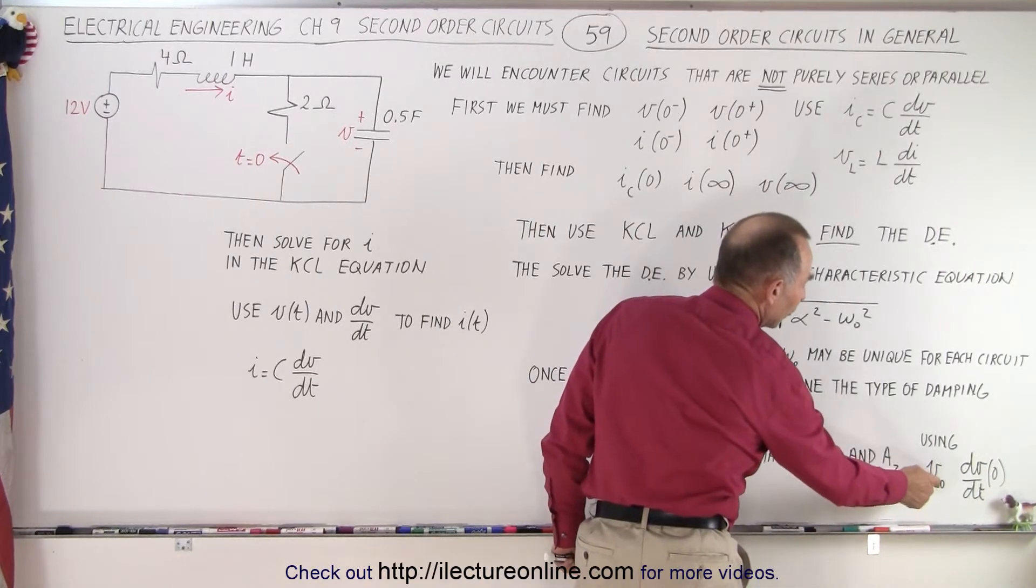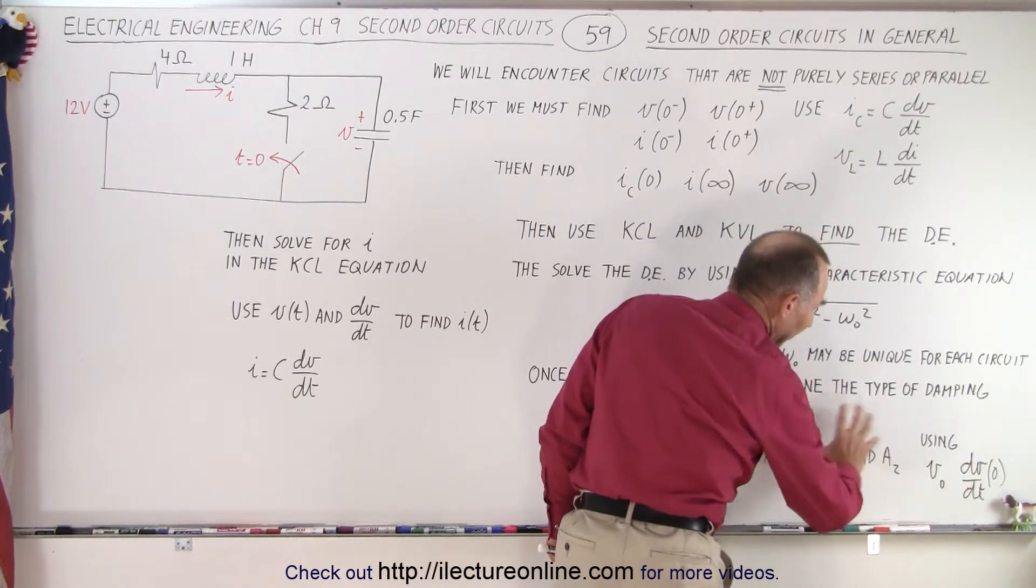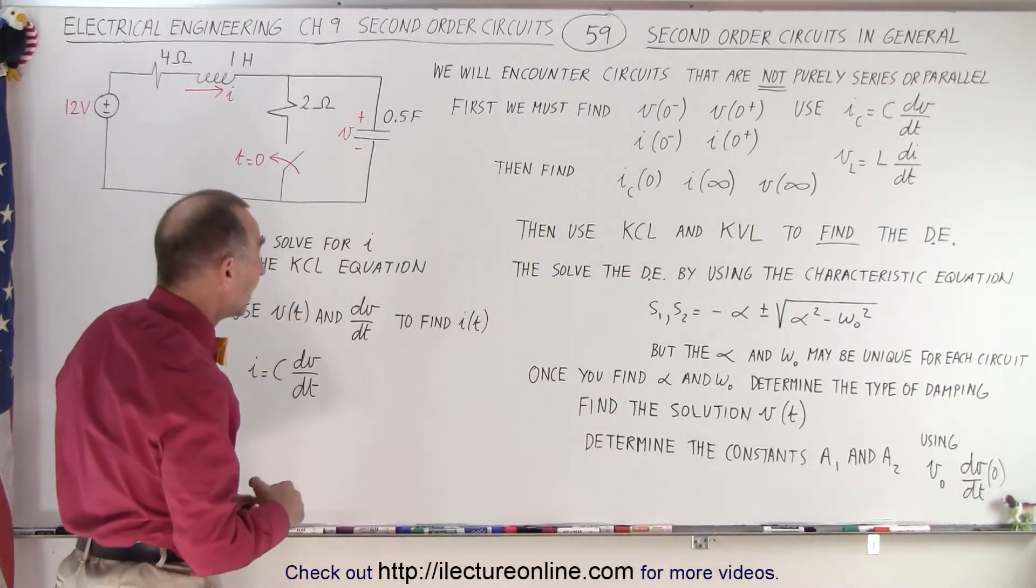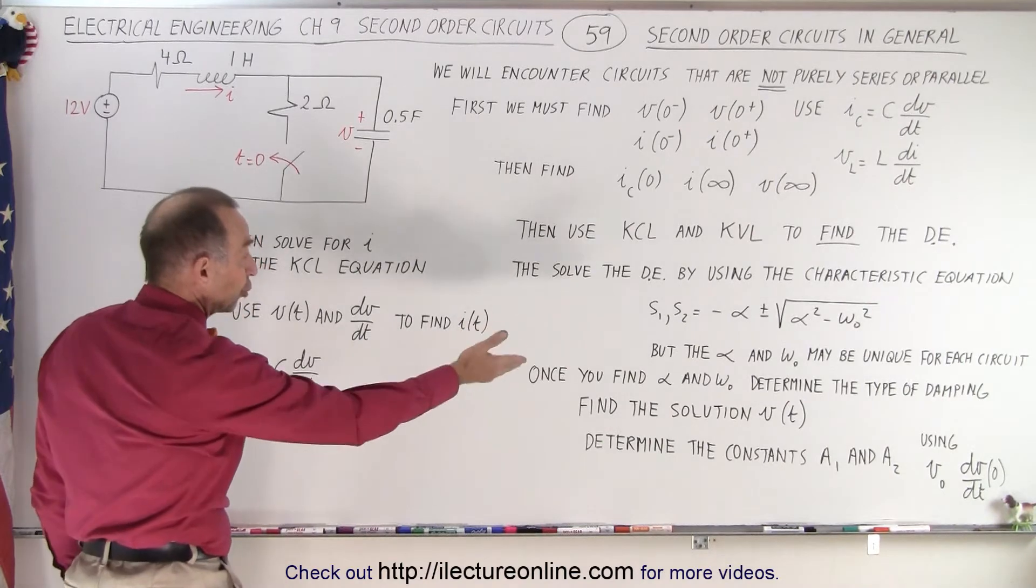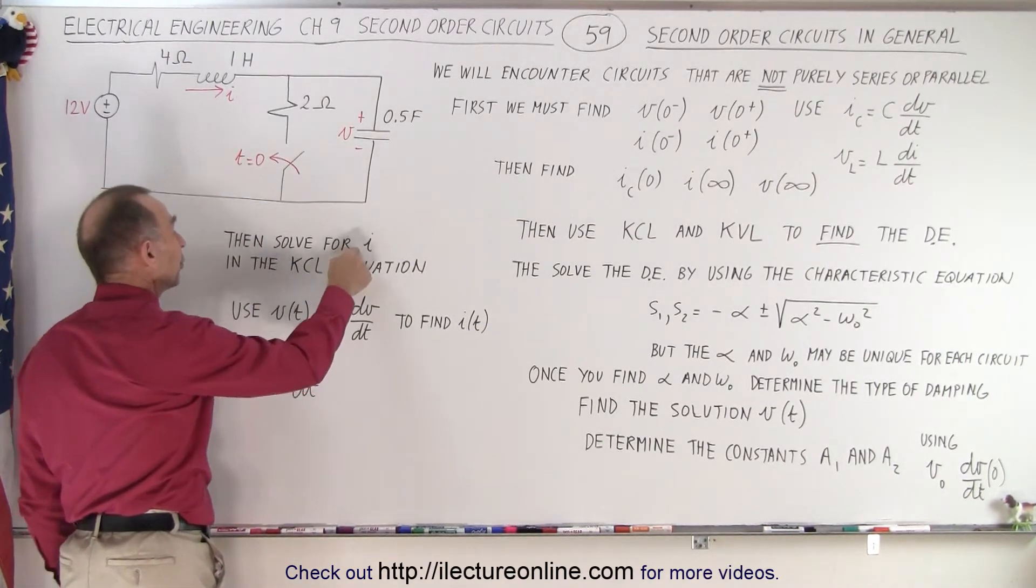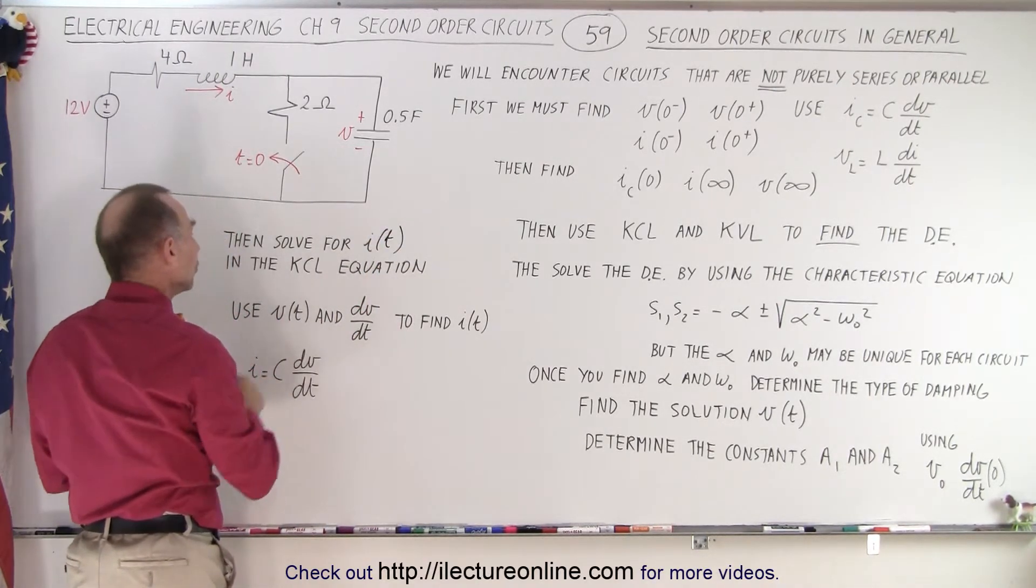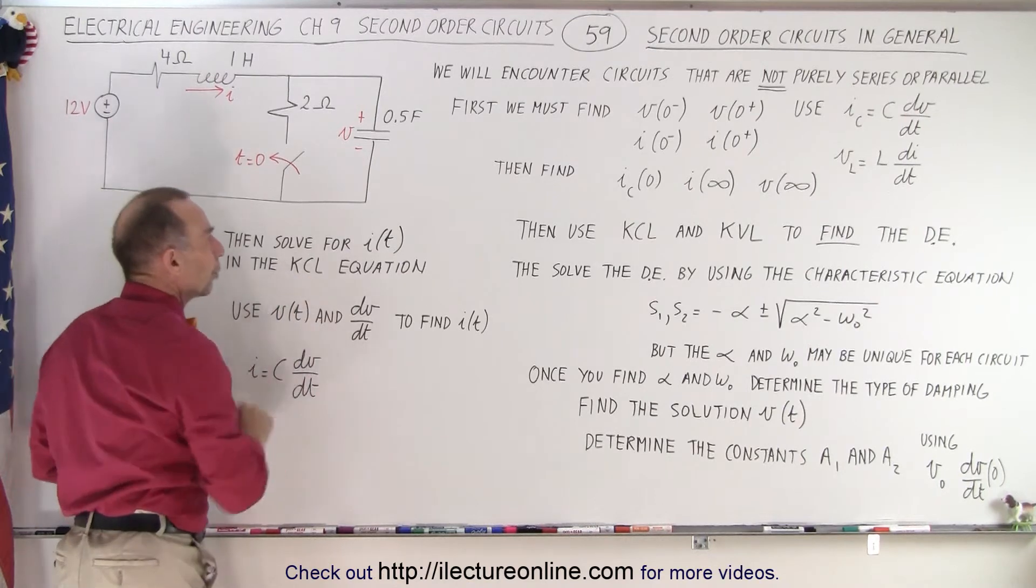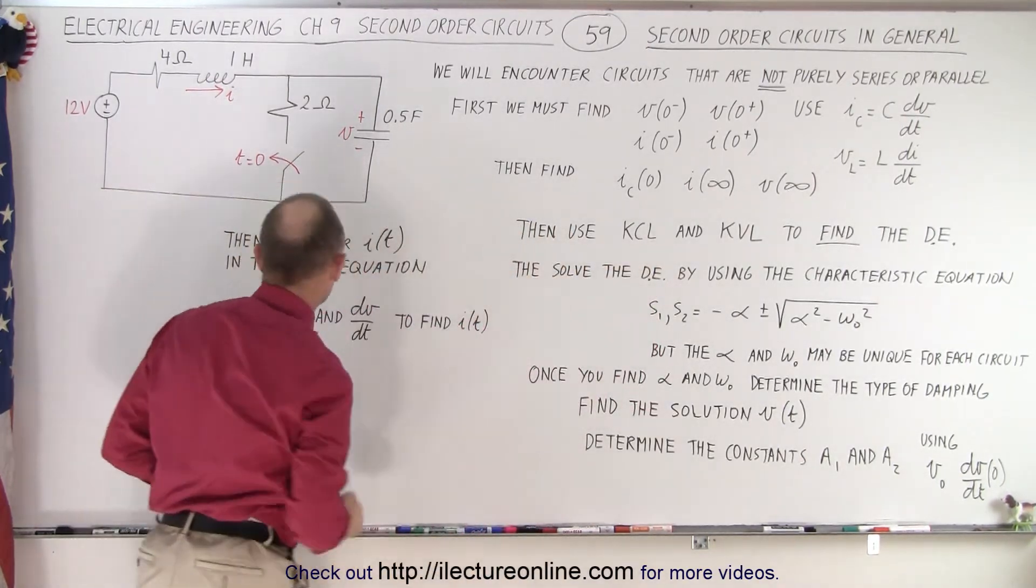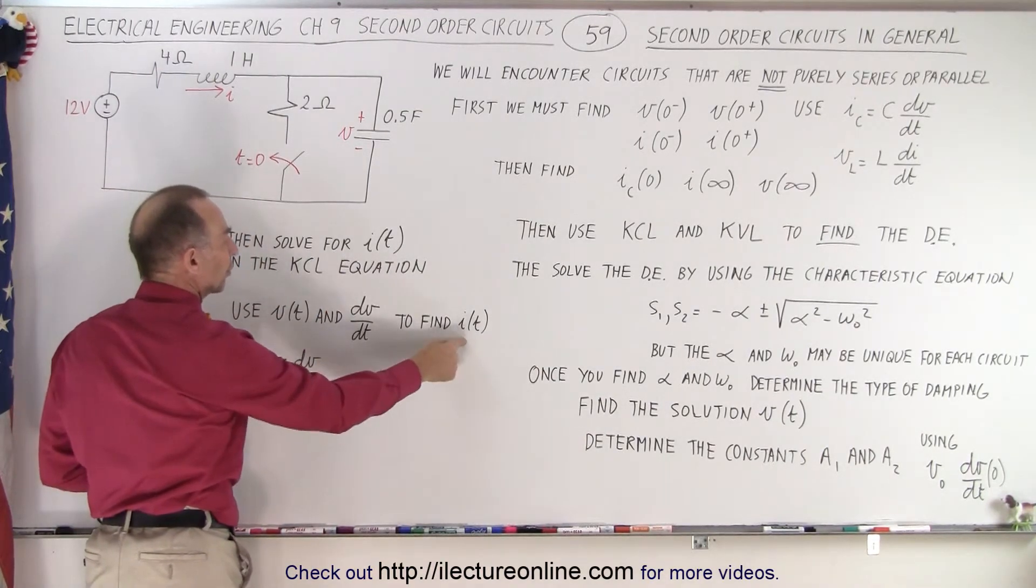Then, of course, we need to use V sub not and dV/dt when time equals 0 to find out what these constants are. So that technique is pretty well the same as what we've seen before. Once we establish a solution to the voltage as a function of time, then we have to solve for current as a function of time. What we're going to do is start out by using the KCL equation that we found in the beginning here, solve that equation for the current, and then use the voltage and the dV/dt to find the current.